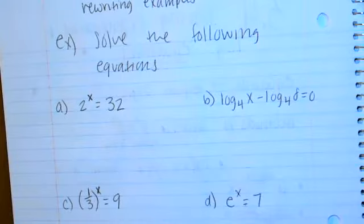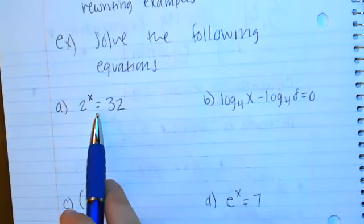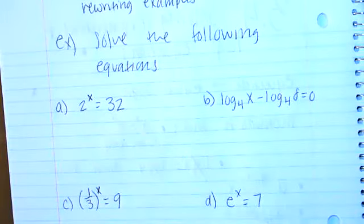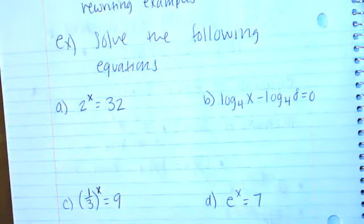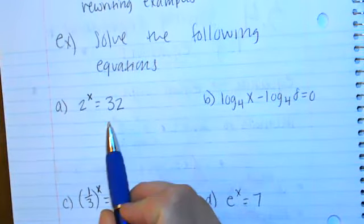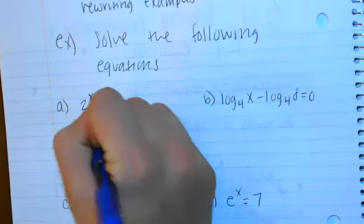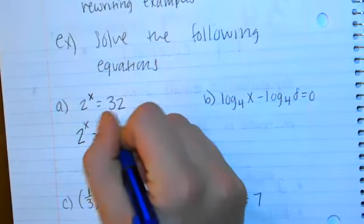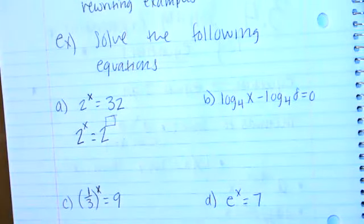Looking at this first equation: 2 to the x equals 32. My first thought is that x has to come down out of the exponent. I'm not going to solve for x unless I can get that variable out of the exponent position. The easiest way to think about this is: can I rewrite 32 as 2 to some exponent? I want to write this as 2 to the x equals 2 to some exponent.